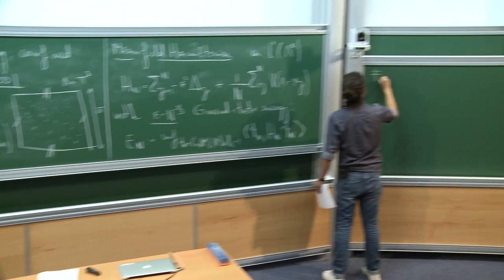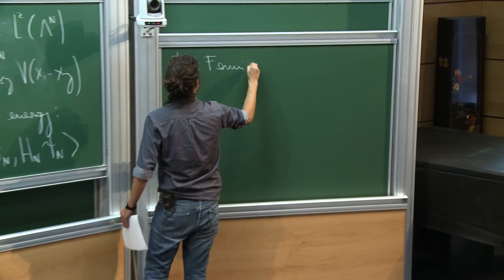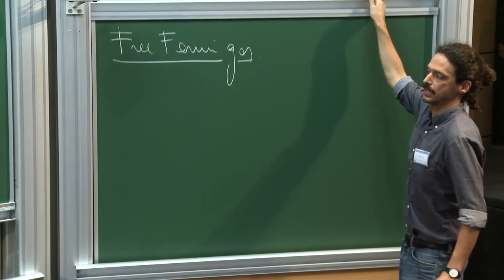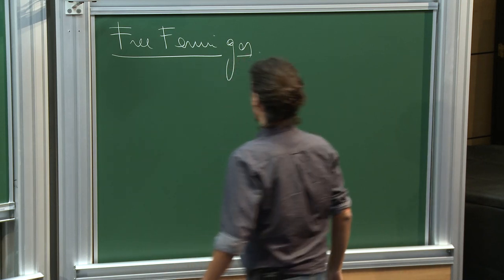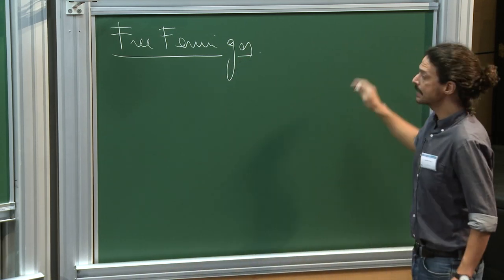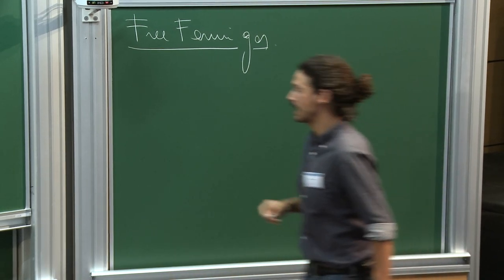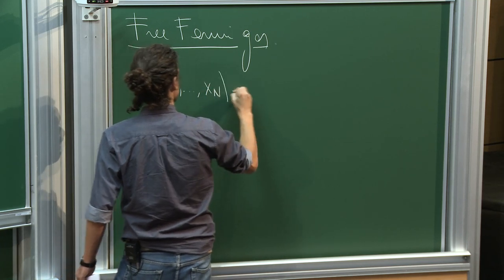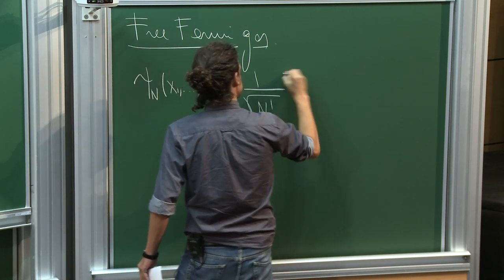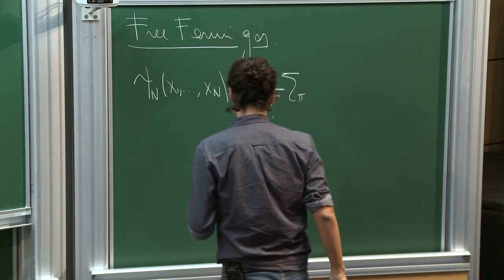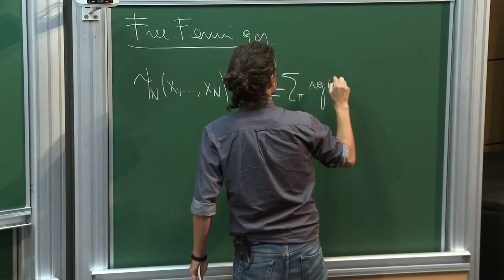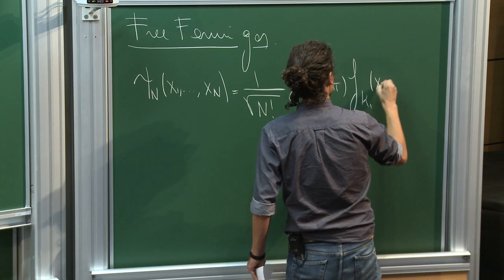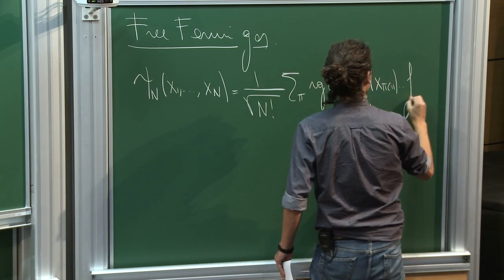As an example, consider the free Fermi gas — the non-interacting problem. The eigenstates of the Laplacian in the fermionic sector are antisymmetric tensor products, called Slater determinants. You have a sum over permutations with the sign of the permutation, then a product of single-particle eigenstates of the Laplacian.